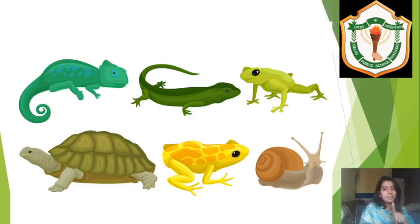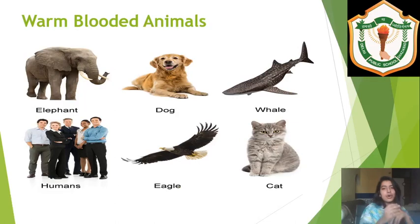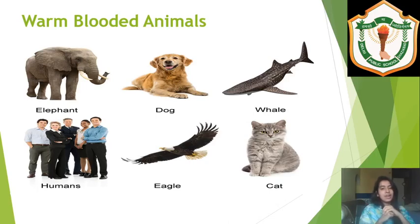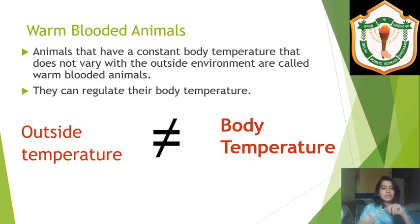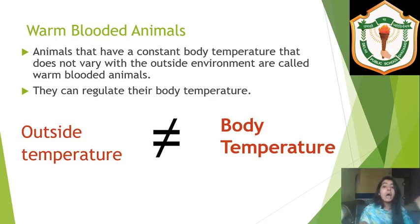Mammals and birds come under the category of warm-blooded animals. Examples include elephants, dogs, whales, humans, eagles, and cats. Now you know that we are warm-blooded animals! Animals that have a constant body temperature that does not vary with the outside environment are warm-blooded animals.